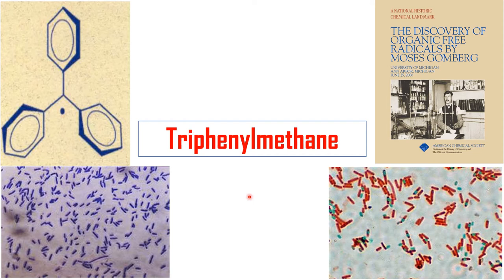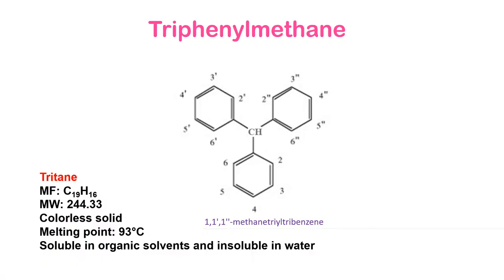Hello everyone. This video is about triphenylmethane. If you have studied microbiology, you can quickly make out that this substance has something to do with bacterial staining. There is also an interesting story about Moses Gomberg, who is considered the founder of organic free radicals. So we are going to see that story also. Let's get started.